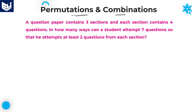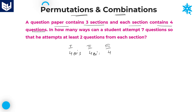Let's see the first question in this session. A question paper contains 3 sections, and each section contains 4 questions. So there are 3 sections with 4 questions each, meaning a total of 12 questions.